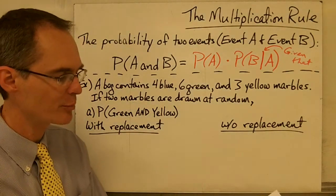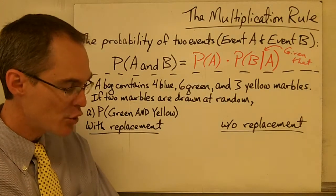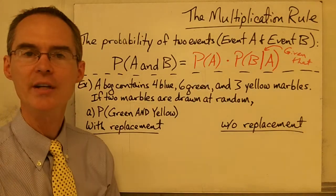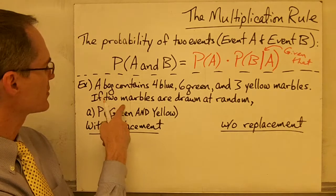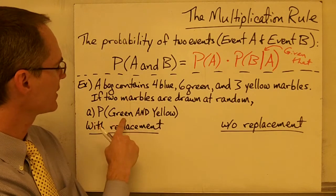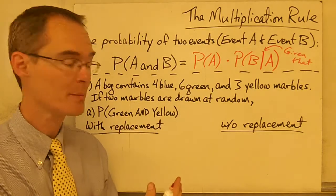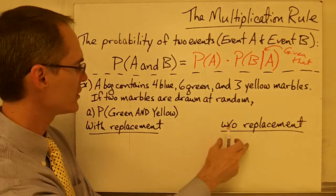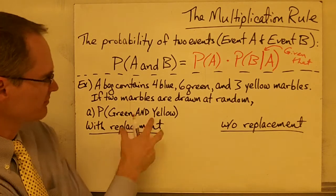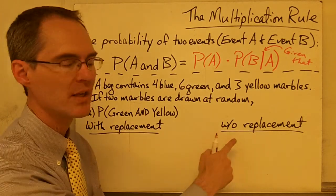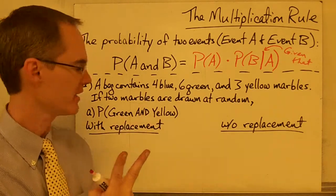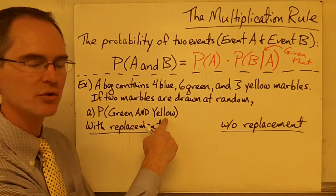Let's take a look at how we might use this formula with this example. The bag contains four blue marbles, six green marbles, and three yellow marbles. If two marbles are drawn at random from the bag, what's the probability of first drawing a green marble and then drawing a yellow marble? We're going to calculate this in two different ways — with replacement and without replacement.